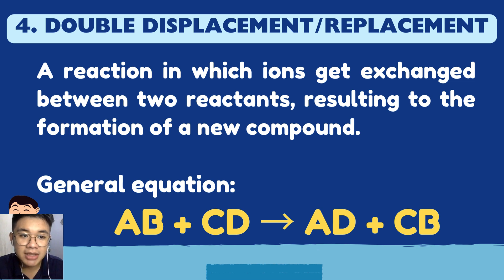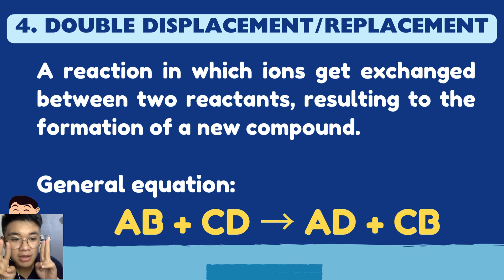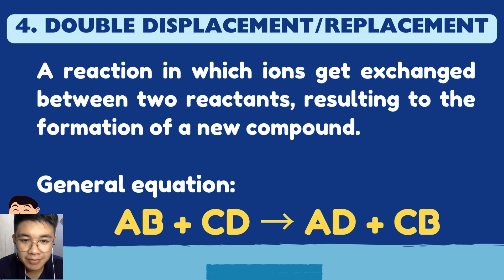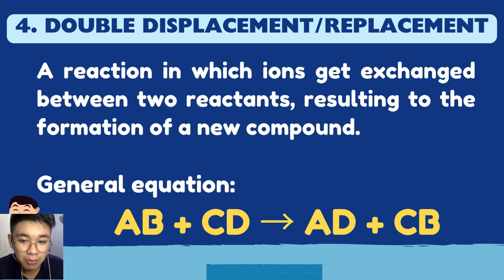In the general equation, A was paired with B, and C was paired with D. After the reaction, A pairs with D and C pairs with B — they exchanged partners. Like two couples swapping partners — that's the analogy for double displacement.